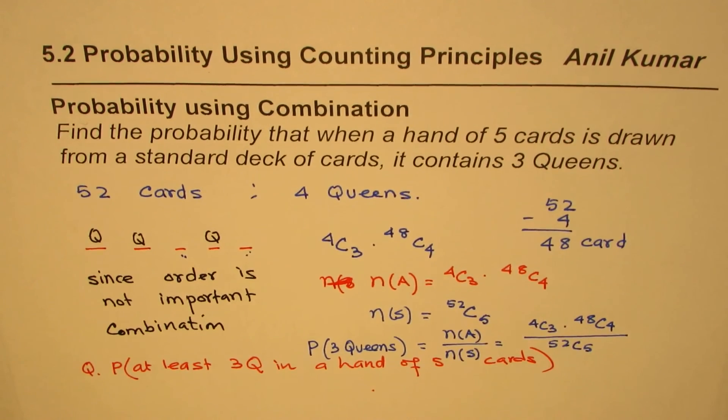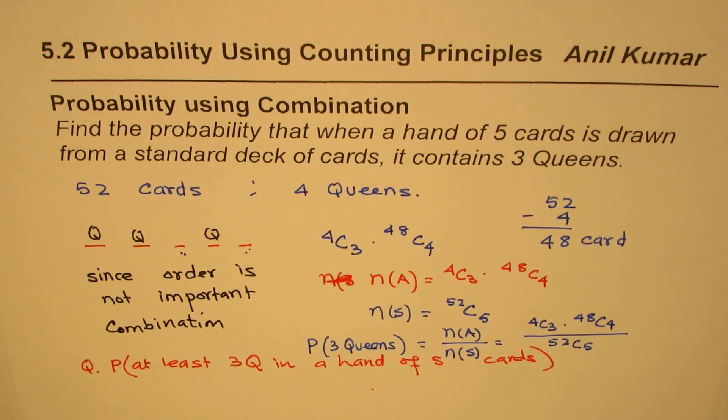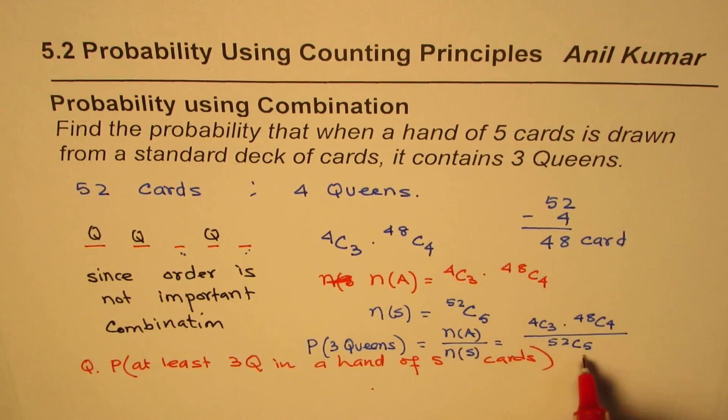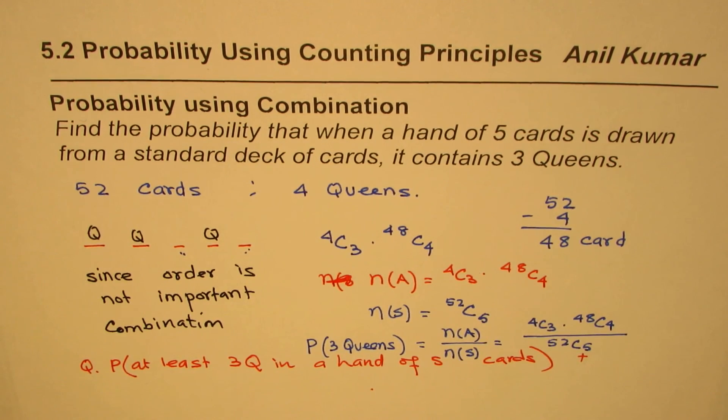At least means 3 or 4, so we'll add the other combination - 4 queens and 1 other card - that goes into the numerator. The denominator we know is 52C5. I'm Anil Kumar and I hope that helps. You can always subscribe and share my videos. Thank you and all the best.